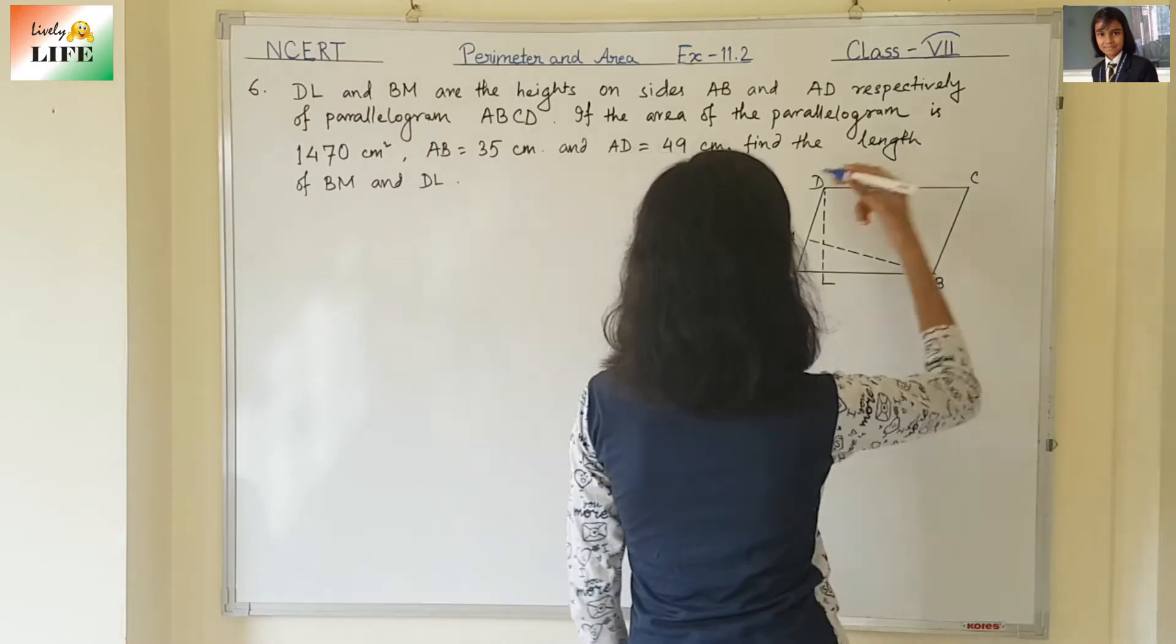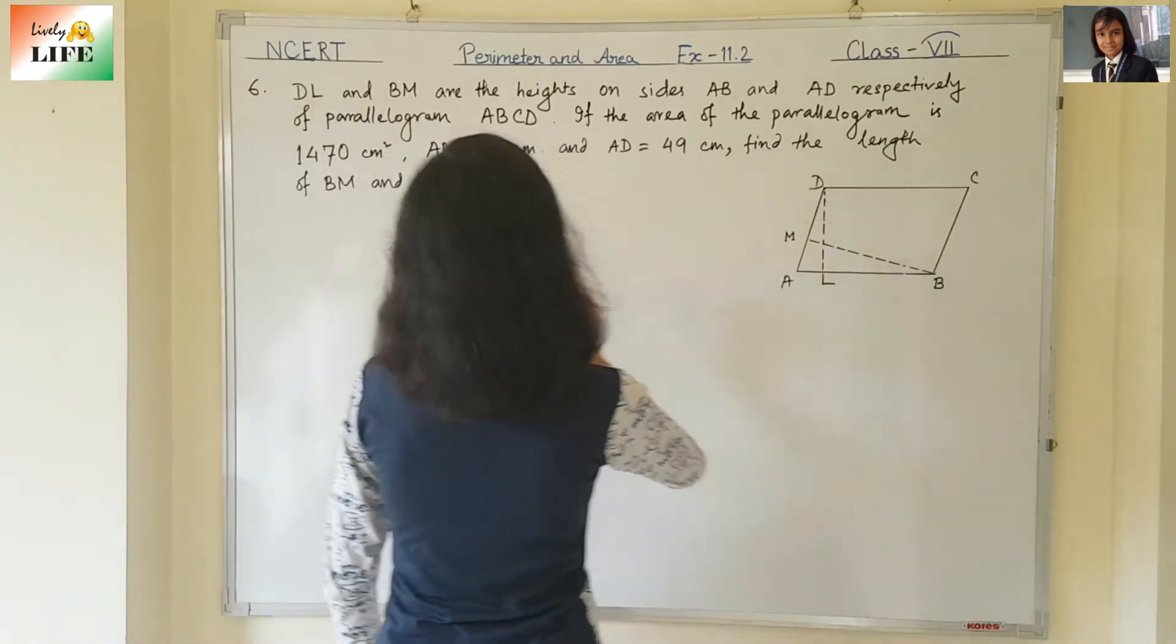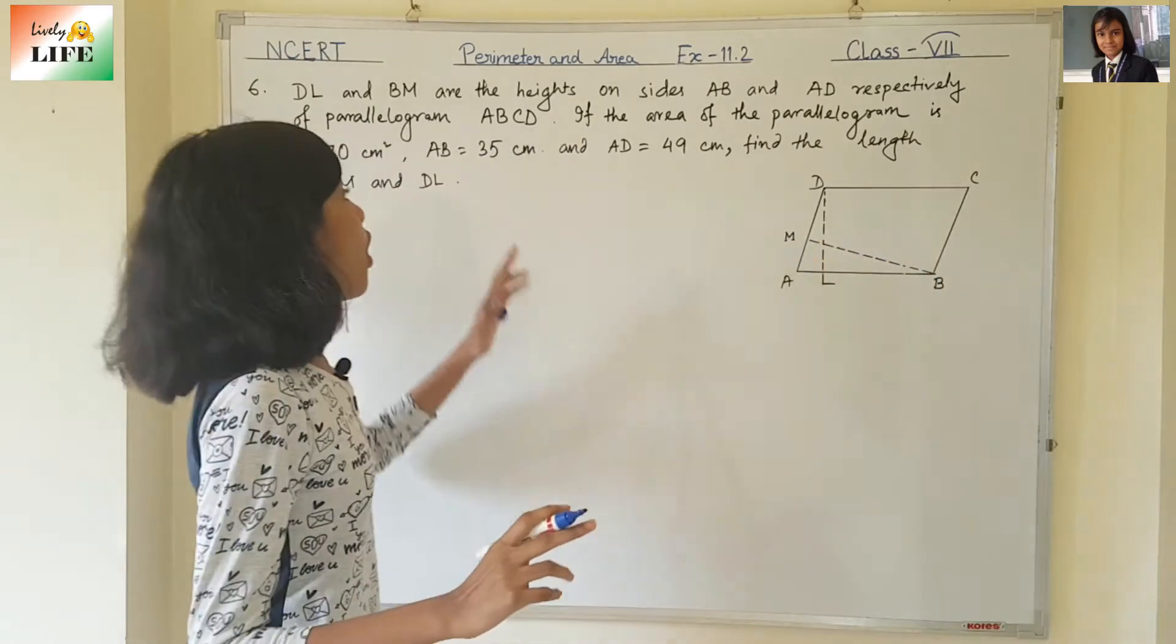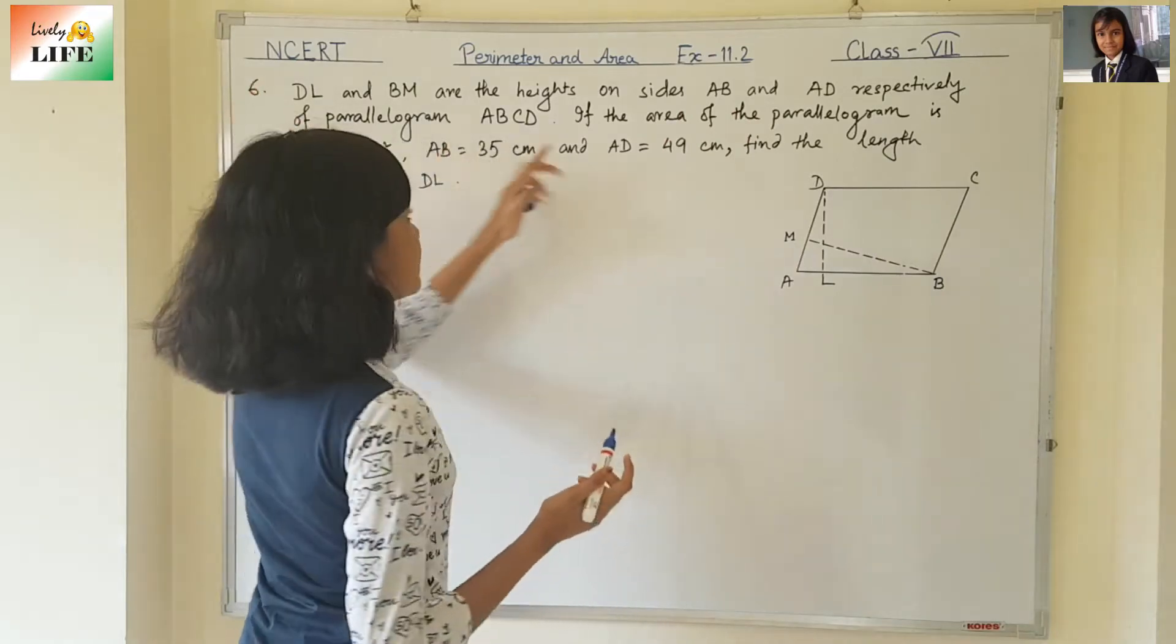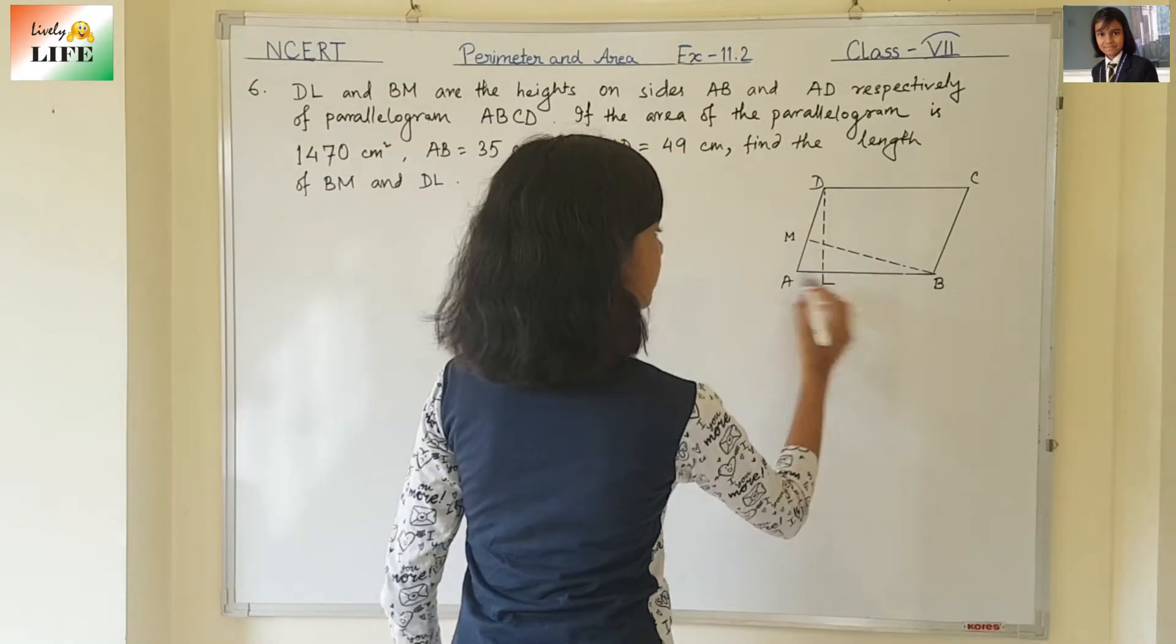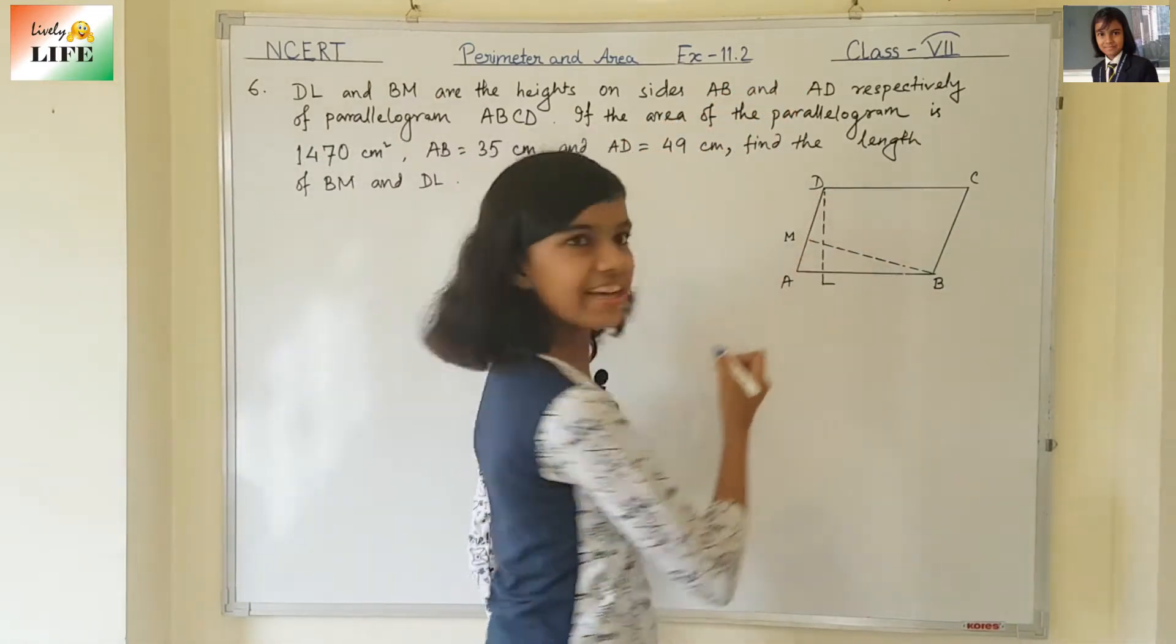You can see here is a parallelogram ABCD. DL, this one, and BM are the heights on sides AB and AD respectively. DL is on the side AB, and BM is on the side AD.